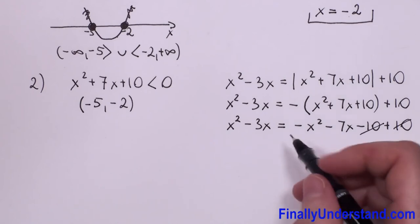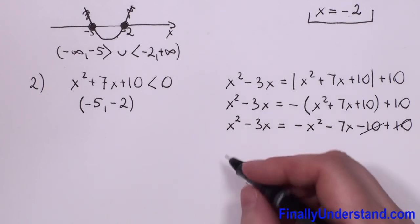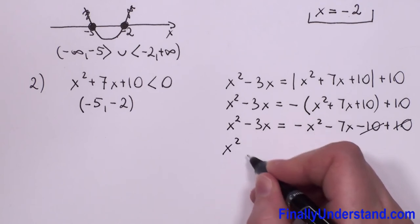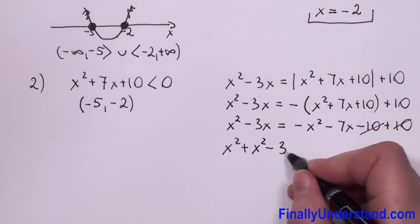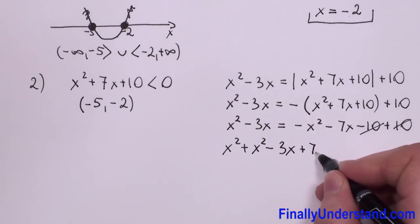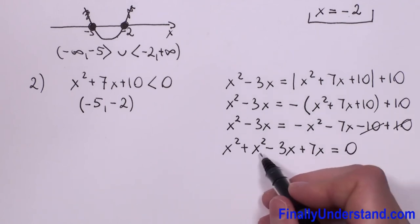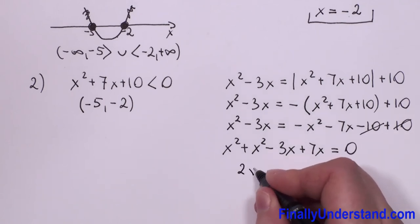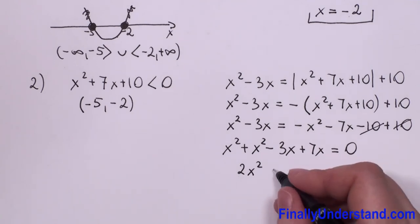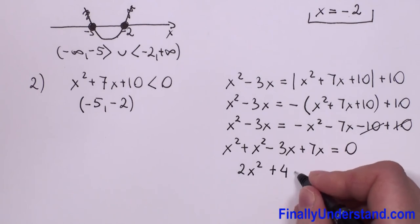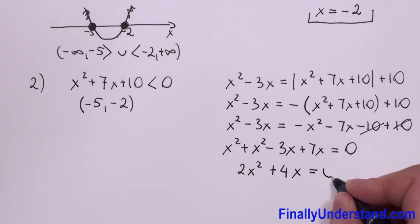The negative 10 and positive 10 cancel. Moving all terms to the left side: x squared plus x squared gives 2x squared, and negative 3x plus 7x gives positive 4x, so we have 2x squared plus 4x equals zero.